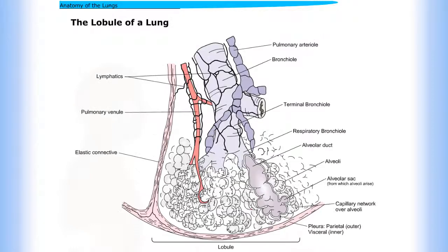The lobule of a lung: pulmonary arteriole, bronchiole, terminal bronchiole, respiratory bronchiole.